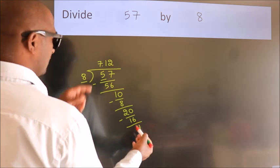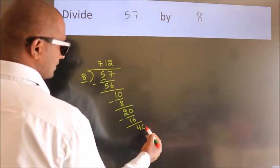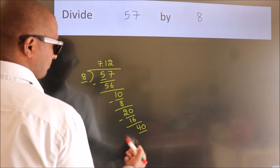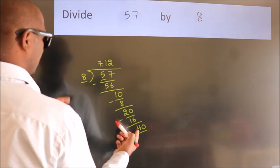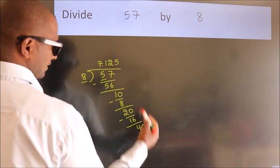After this, we already have the decimal. So directly take 0. So, 40. When do we get 40? In 8 table. 8 times 5 equals 40.